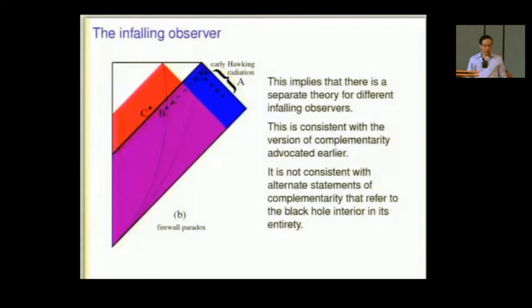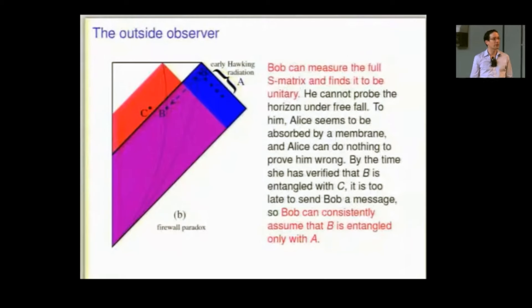Notice that this implies that there's a different theory for different infalling observers. This is quite consistent with what I told you earlier, since different infalling observers who fall in after 85% or 90% or 95% of the Hawking radiation also have different causal diamonds. There are alternative statements about what complementarity means that I think are somewhat misleading, like there's a map between degrees of freedom in the inside, that there's some sort of scrambled version of the Hawking radiation. I think that's misleading, for example, it doesn't even make sense to speak about all of the degrees of freedom inside the black hole at the same time according to the restriction to a causal diamond. Nobody can see them all.